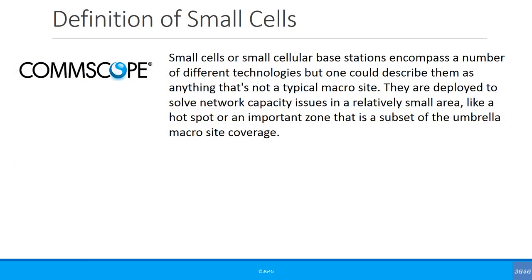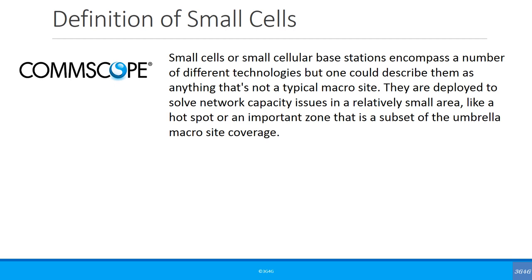Looking for a definition of small cells: according to a blog on CommScope, small cells or small cellular base stations encompass a number of different technologies, but one could describe them as anything that's not a typical macro site. They are deployed to solve network capacity issues in a relatively small area — a hotspot or important zone that is a subset of the umbrella macro site coverage. The presenter doesn't completely agree but says it's a good definition.